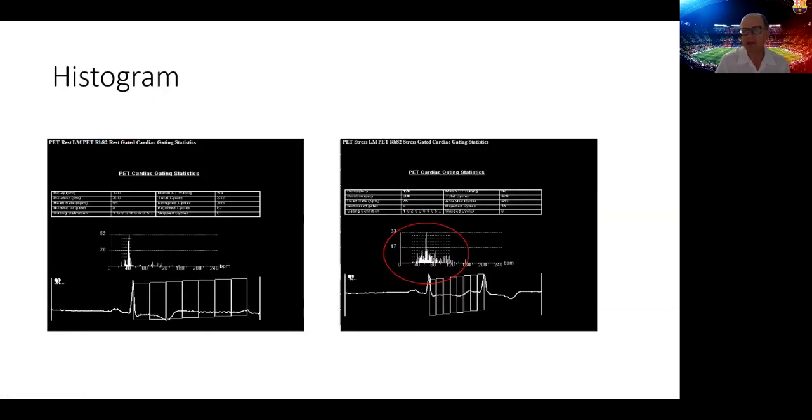The next step is to review the histograms from which we generate the gated images. On the rest images on the left-hand side, you can see this is a very tight histogram indicating very nice acquisition with a very constant heart rate. On the stress side, the histogram is widespread, and the patient went into atrial flutter from rest to stress. This is important to recognize in case you see a drop or change in the ejection fraction from rest to stress, which should be attributed to a heart rate issue rather than a true drop in ejection fraction.